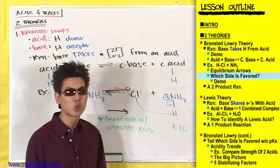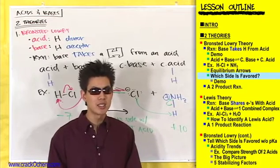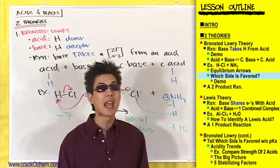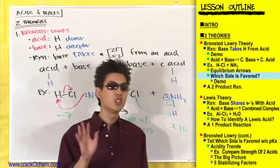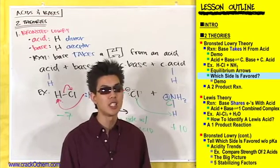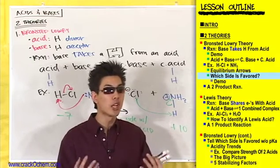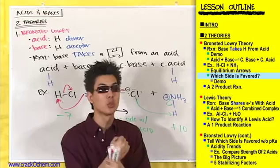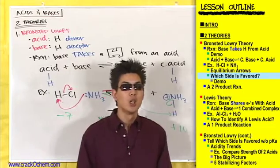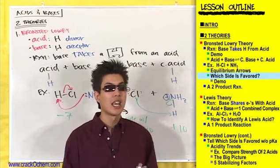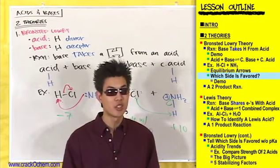What does it mean to be a strong or weak acid? When you say one acid is stronger than another acid, a lot of students like to define an acid's strength in terms of how strongly it holds onto its hydrogen. But that can be a little tricky. Let me define it differently: a strong acid gives up a hydrogen really easily, while a weak acid doesn't want to let its hydrogen go.